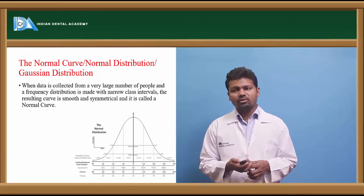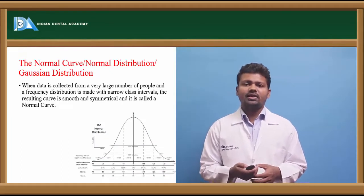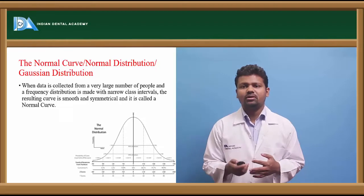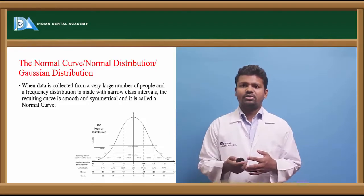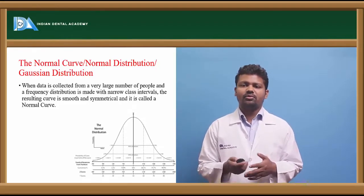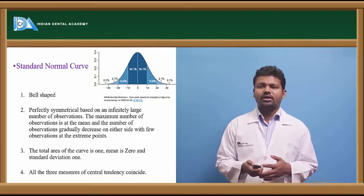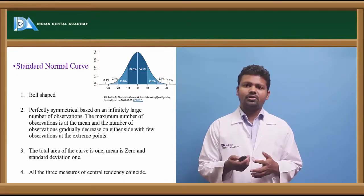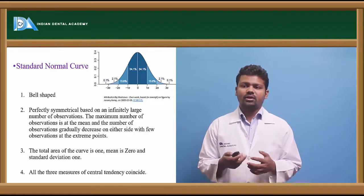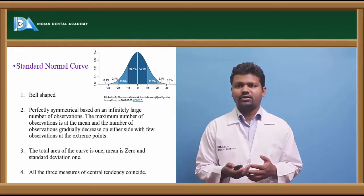The normal curve or normal distribution occurs when data is collected from a very large population and frequency distribution is made with narrow intervals. The standard normal curve is bell-shaped and perfectly symmetrical, with a total area of 1, mean of 0, and standard deviation of 1.